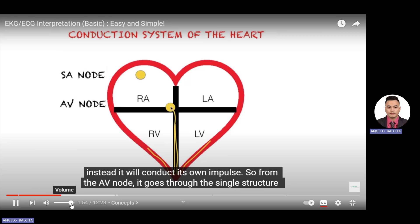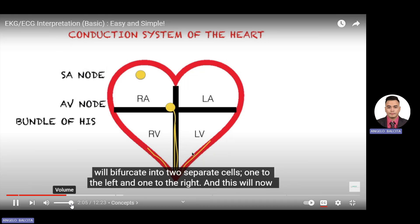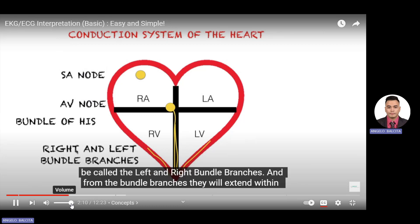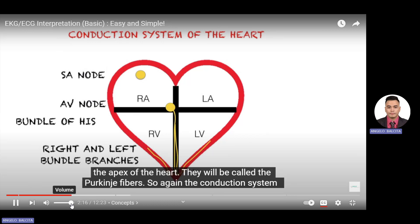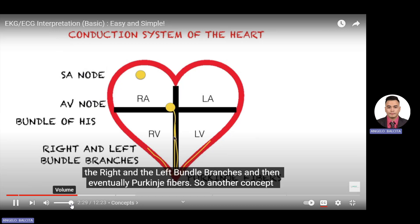From the AV node, conduction goes to the bundle of His. From the bundle of His, the cells bifurcate into two separate branches — one to the left and one to the right — called the left and right bundle branches. From the bundle branches, they extend within the apex of the heart and are called the Purkinje fibers. So the conduction system goes: SA node → AV node → bundle of His → right and left bundle branches → Purkinje fibers.